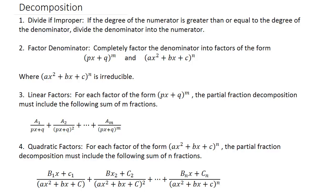Let's look at doing some integrals — finding some antiderivatives using partial fractions. Here are some things you have to look for. The first one: if it's improper, that means if the degree of the numerator is greater than or equal to the degree of the denominator, then you need to divide the denominator into the numerator, and then you can proceed with partial fractions.